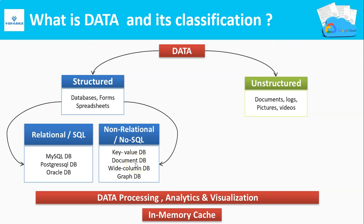On the other hand, non-relational databases will have a dynamic schema. Examples of non-relational databases are Key-Value DB, Document DB, Wide Column DB, and Graph DBs. The last two categories represent Data Caching, Processing, Analytics, and Visualization layers, which can be applied to both structured and unstructured data.